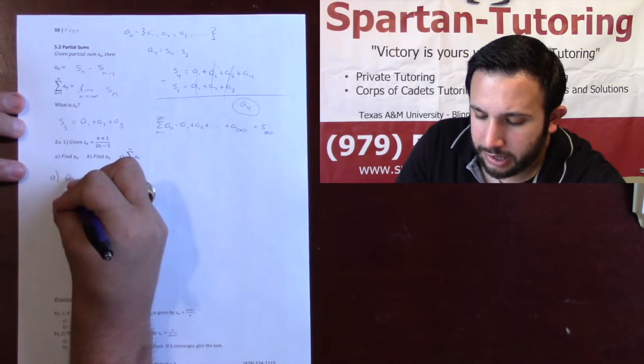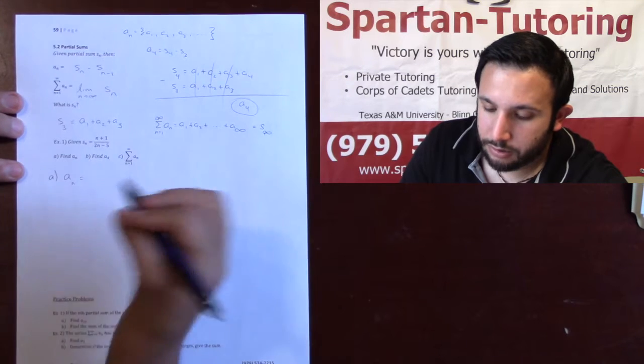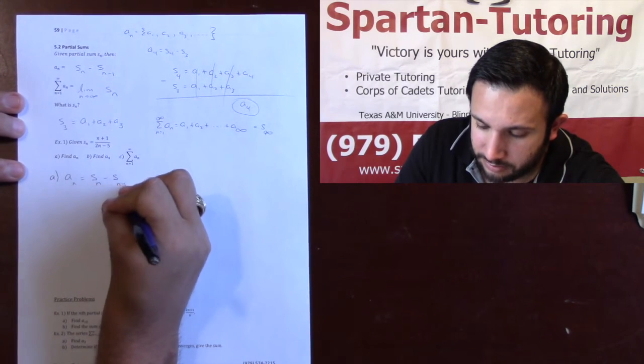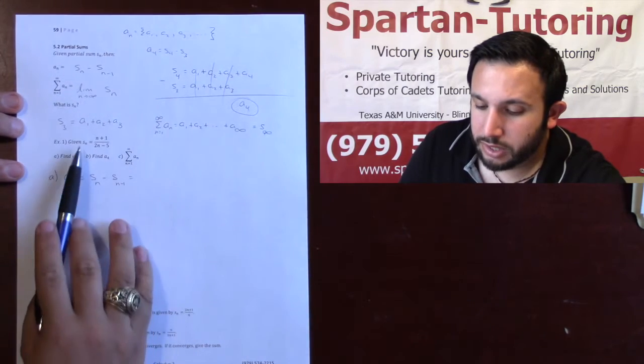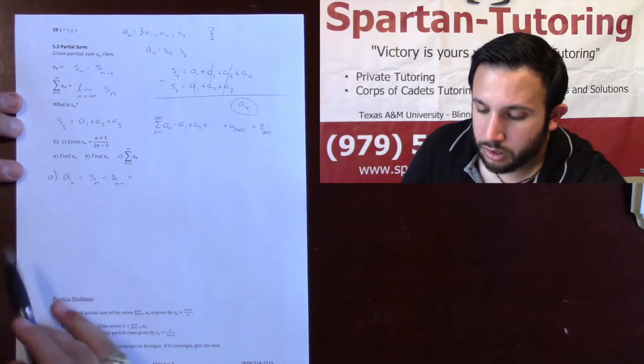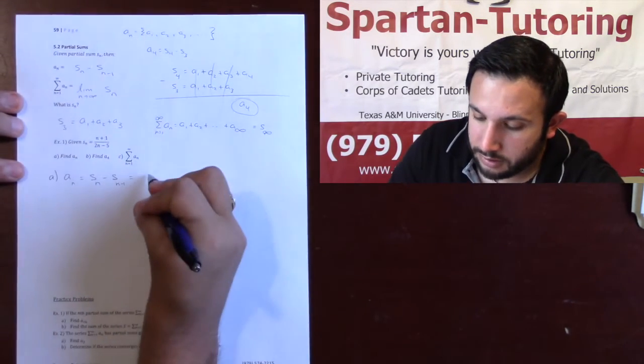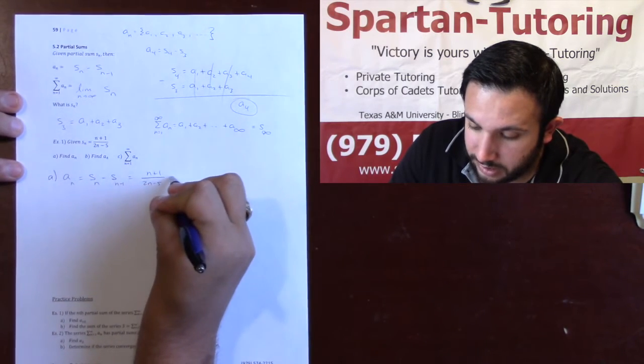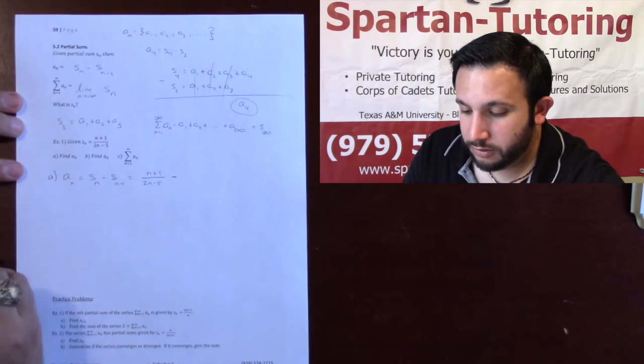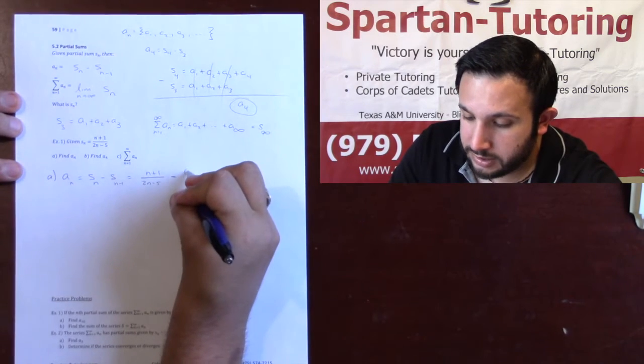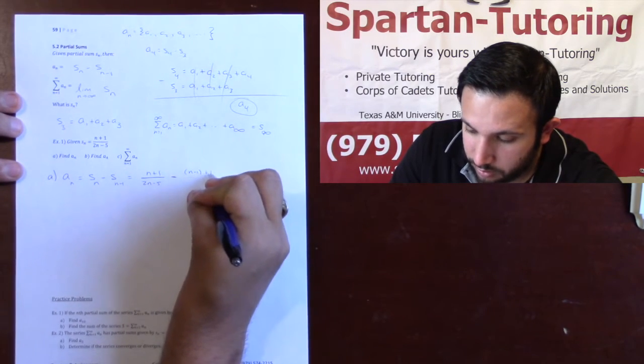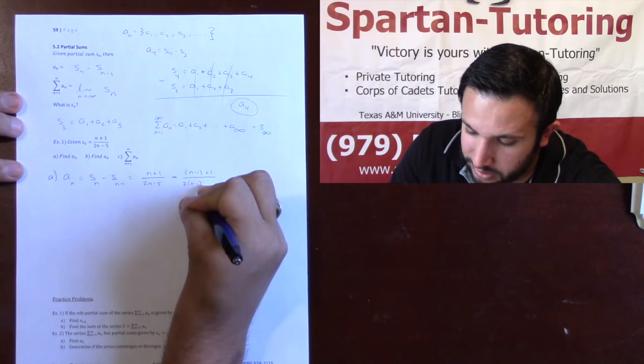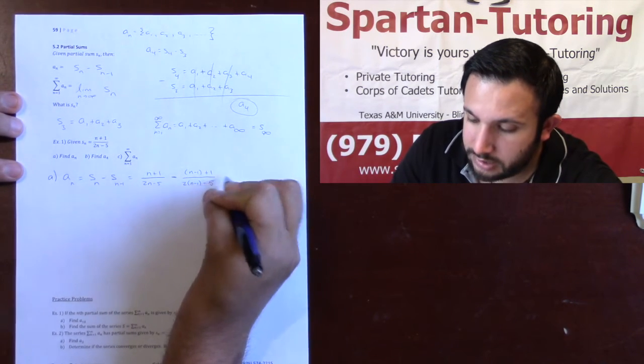So let's take a look at part A. For part A, I want to find An. What An is, it's Sn minus Sn minus 1. Given that Sn is n plus 1 over 2n minus 5, this is n plus 1 over 2n minus 5 minus, be careful. The reason I'm going to say be careful is this is n minus 1 plus 1 over 2 times n minus 1 minus 5.